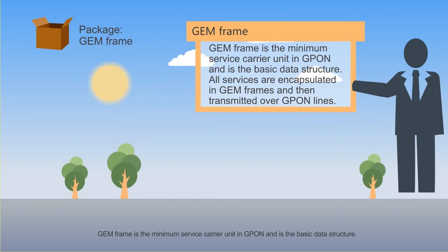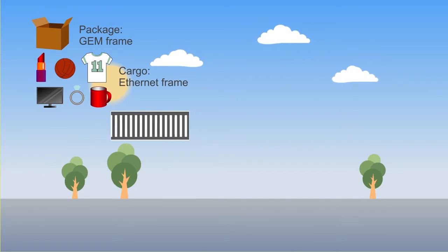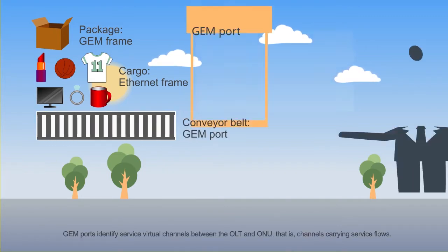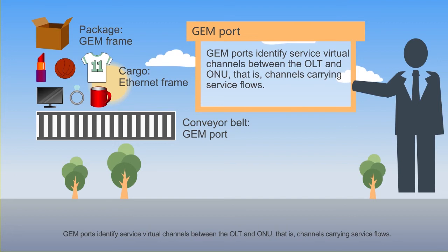GeneFrame is the minimum service carrier unit in G-PON and is the basic data structure. All services are encapsulated in GeneFrames and then transmitted over G-PON lines. GenePorts identify service virtual channels between the OLT and ONU — that is, channels carrying service flows.